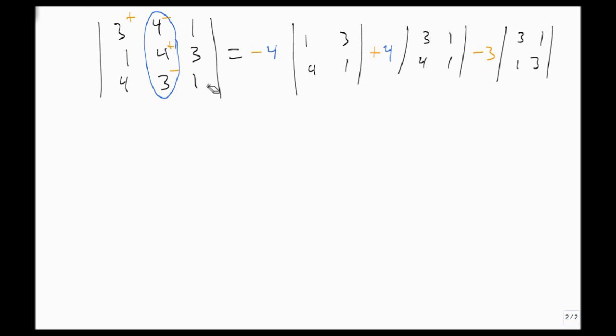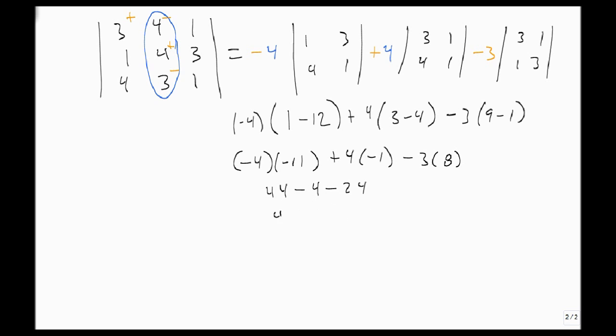And now we're ready to go. We just find our two by two, so this is one minus twelve times a minus four plus four times three minus four minus three times nine minus one, so this is minus four times minus eleven, plus four times minus one minus three times eight, that's forty-four minus four minus twenty-four, forty-four minus twenty-four minus four is twenty minus four, so this is sixteen. And I've successfully found my determinant.